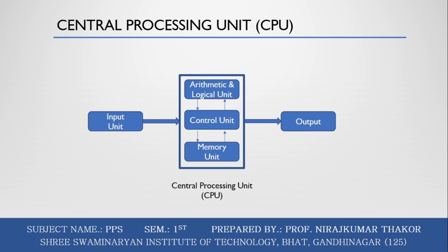The Control Unit understands which operations to execute accurately and in which order. The Arithmetic and Logical Unit (ALU) is a combination of digital electronic circuits that can perform arithmetic operations on integer binary numbers. It represents arithmetic and logical operations. The output of the ALU changes asynchronously in response to its input. The basic arithmetic and bitwise logical functions are supported by the ALU.